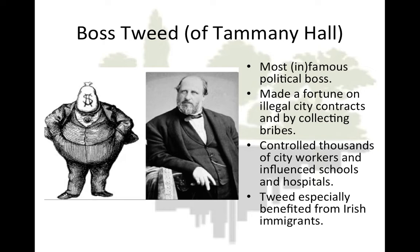The bosses used their control of city hall to make illegal profits on city contracts or by collecting bribes. For example, Boss Tweed of Tammany Hall in New York City controlled thousands of city workers and influenced the operation of schools, hospitals, and other city-run services. Tweed benefited from the support of Irish immigrants. He controlled or bribed lawmakers to pass laws favorable to his interests, and often overpaid himself on construction projects and land sales, stealing millions from the city.